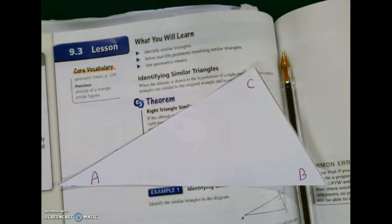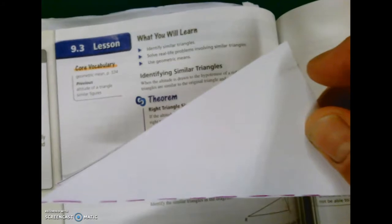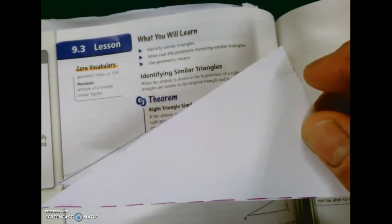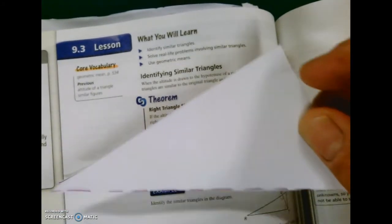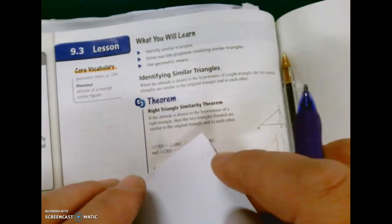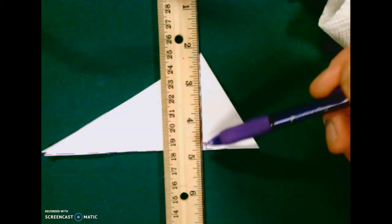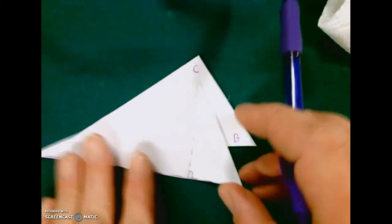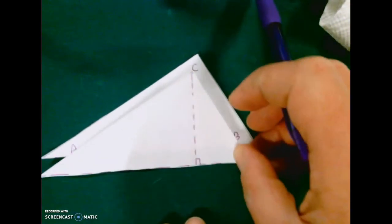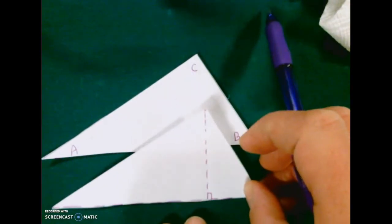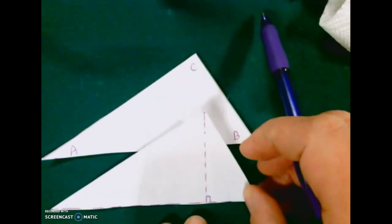Let me zoom out again. We're just copying the one from 9.3 in the text. That's our outer triangle. Let's draw the altitude. The altitude goes straight from the top straight down at a 90-degree angle to the bottom.